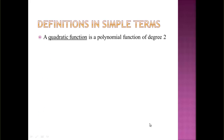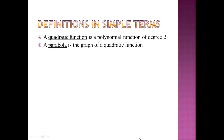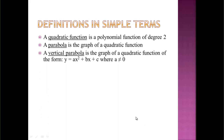A quadratic function is a polynomial function of degree 2. A parabola is the graph of a quadratic function. A vertical parabola is the graph of a quadratic function of the form y = ax² + bx + c, where a is not equal to zero.